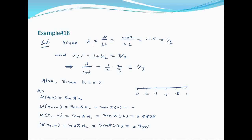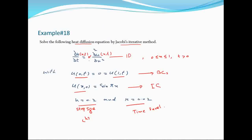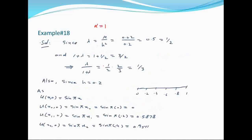सबसे पहले lambda calculate करते हैं। Lambda = k / h² और alpha = 1। Alpha=1, k=0.02, h=0.2 रखने पर lambda = 0.02 / (0.2)² = 1/2 आता है।